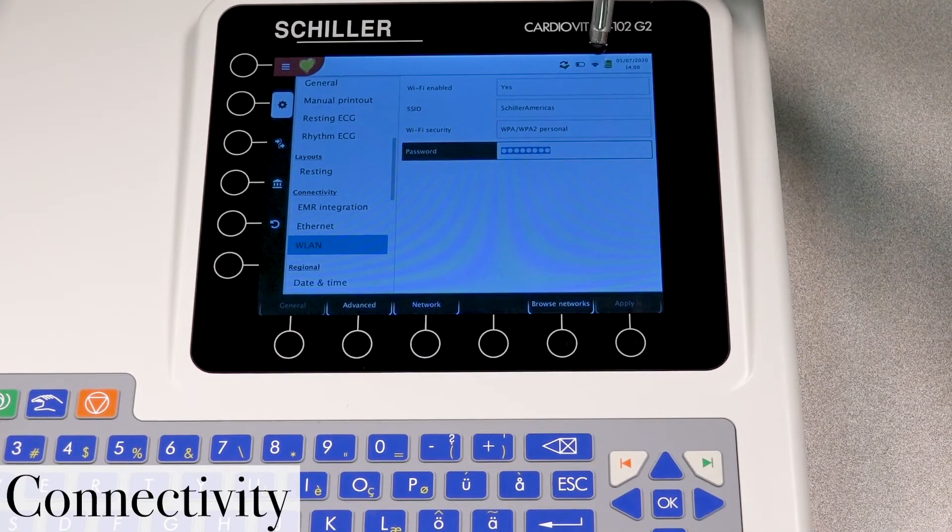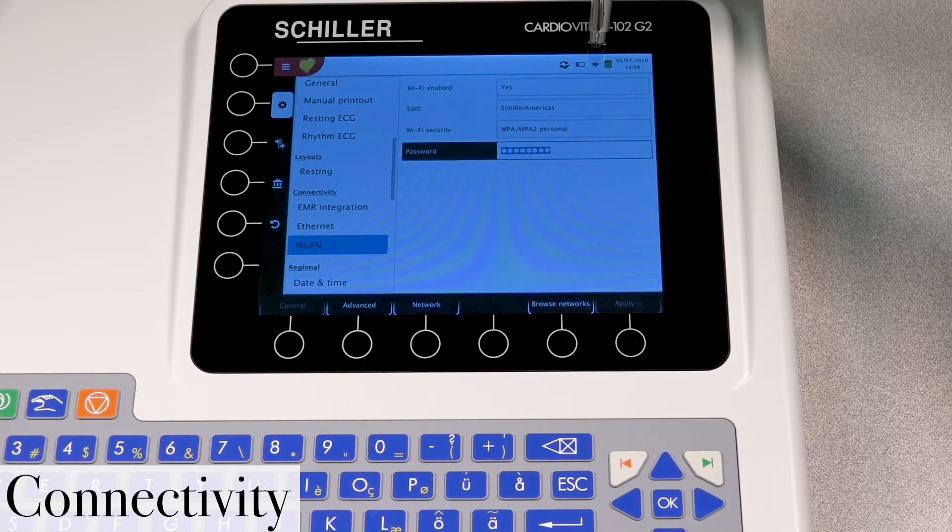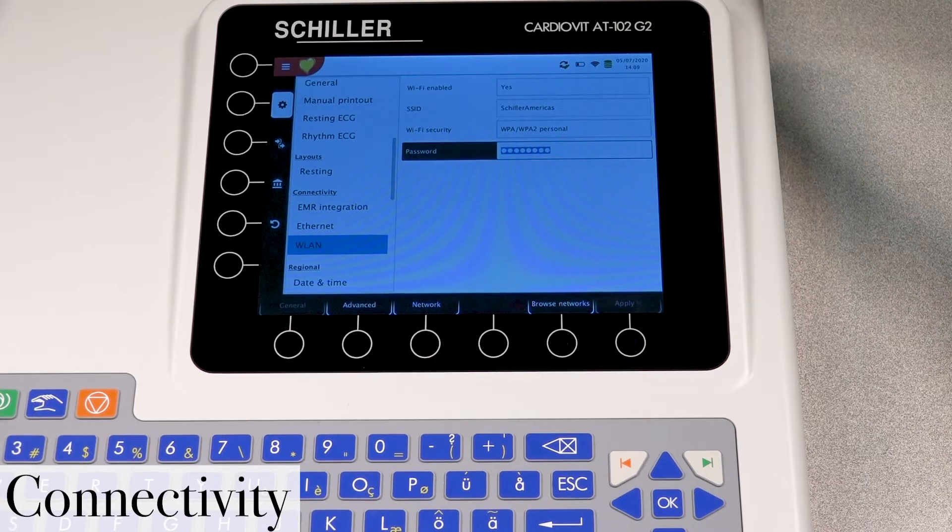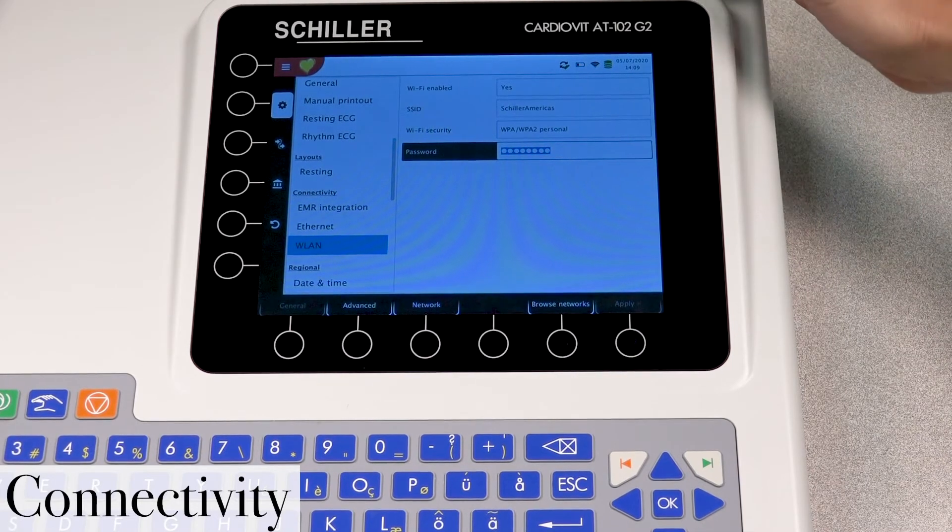Now take a look here at the top. You no longer have an X, you actually now have a black Wi-Fi icon. Now that black Wi-Fi icon indicates that you are now connected to the Wi-Fi network.